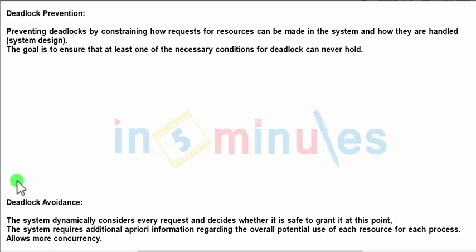When it comes to avoidance, we take each request and ask ourselves whether this particular request can be granted given the current state, and whether it can lead to a deadlock or not. So prevention can be seen as the first step and avoidance as the next step. Deadlock prevention takes the request, processes it, and then takes the final call by not allowing one or more deadlock situations to happen.